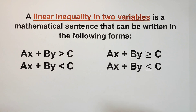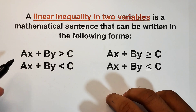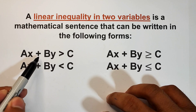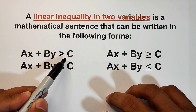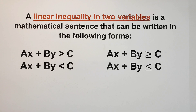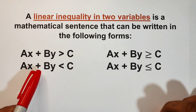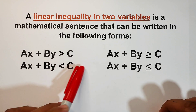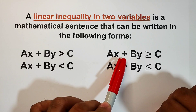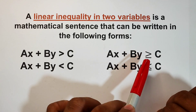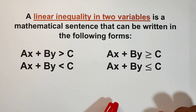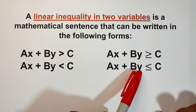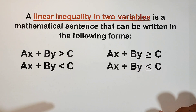A linear inequality in two variables is a mathematical sentence that can be written in the following forms: ax plus by is greater than c; ax plus by is less than c; ax plus by is greater than or equal to c; and ax plus by is less than or equal to c. This is the standard form of linear inequality in two variables.